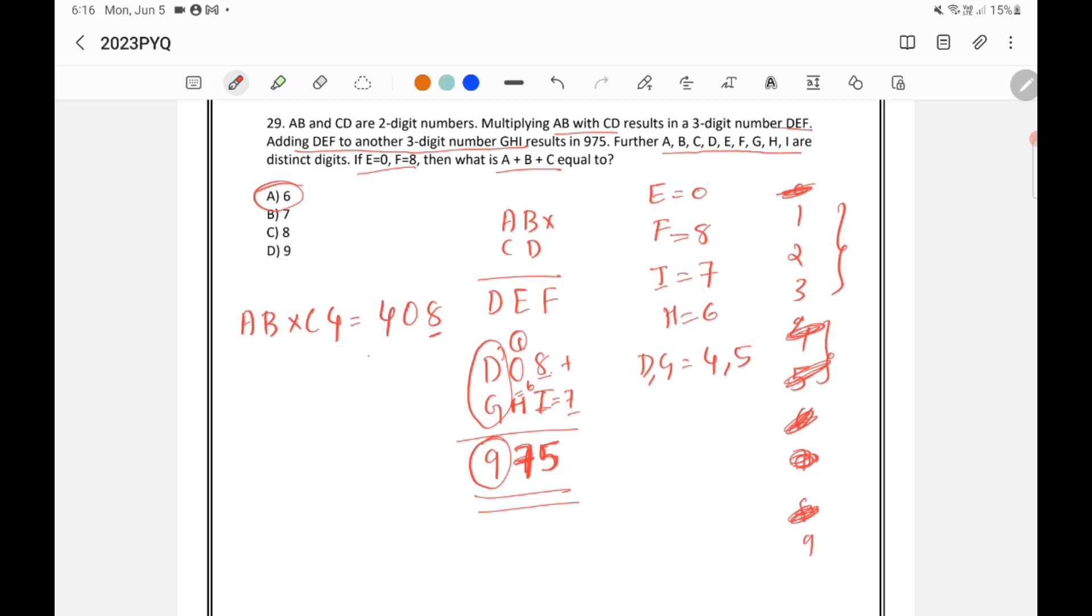So D will be equal to 4. So you can write 4 like this. So we need to now find out what is A, B and C. Now the remaining digits as I have told you is 1, 2, 3 and 9.